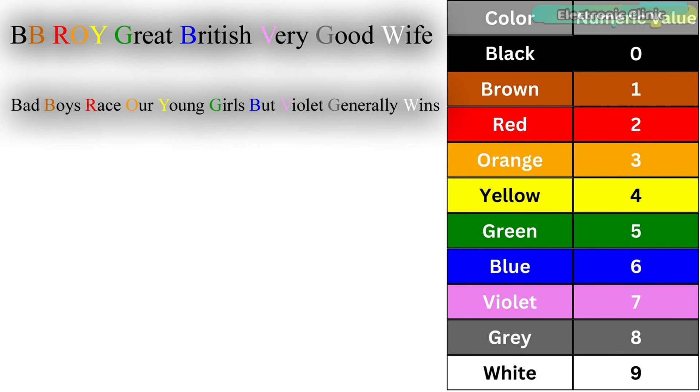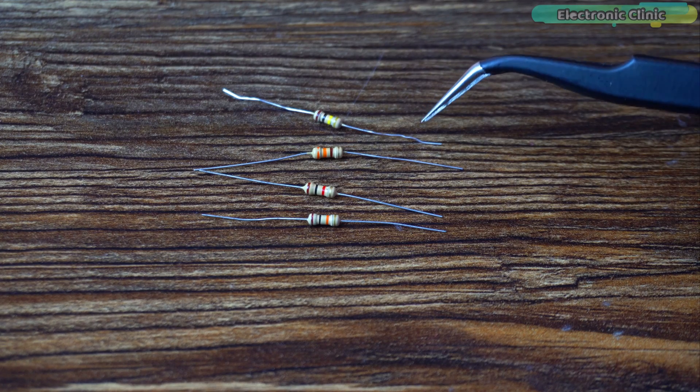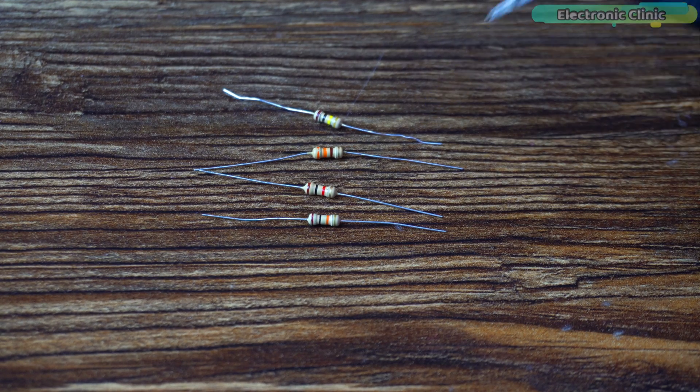After some practice you won't need the chart anymore. You will be able to decode the colors in your mind or you can even use your fingers. I have some four color band resistors and let's read them one by one.